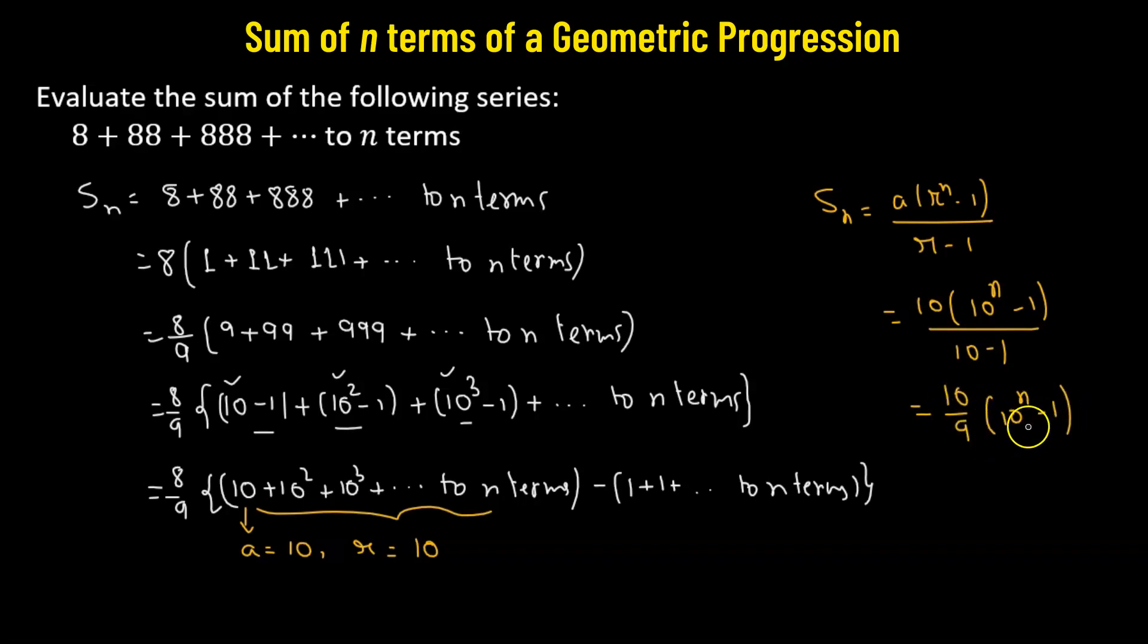So we can multiply 10 raised to the power of n to each of the terms within the parentheses to get 10 raised to the power of n plus 1 divided by 9 minus 10 over 9. So this is the sum.